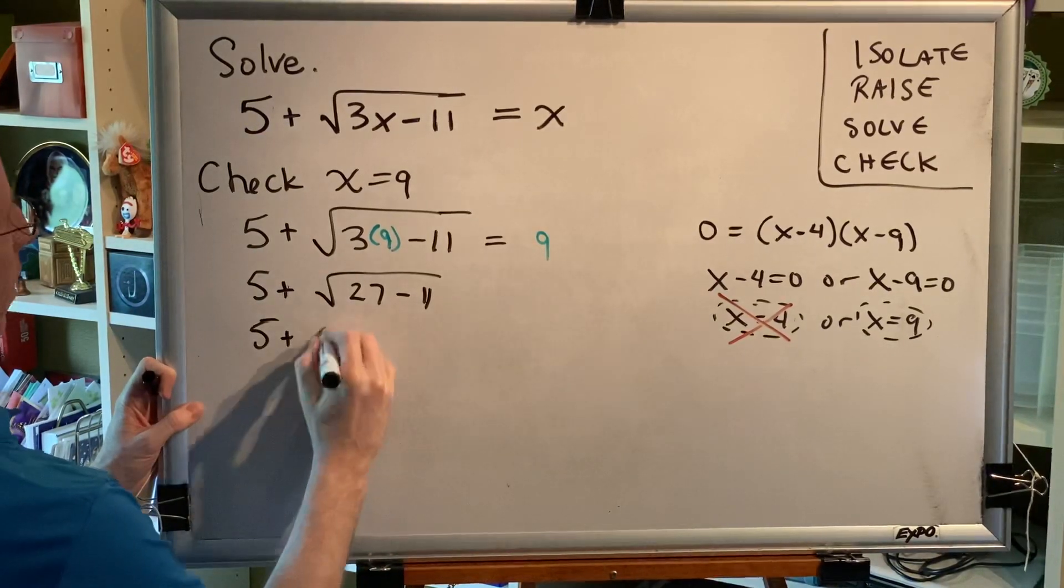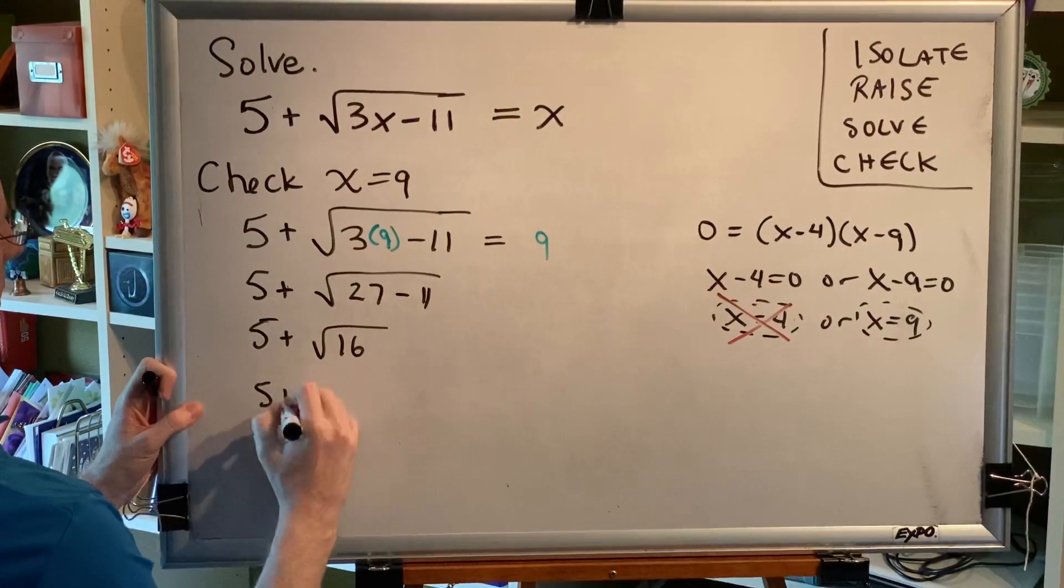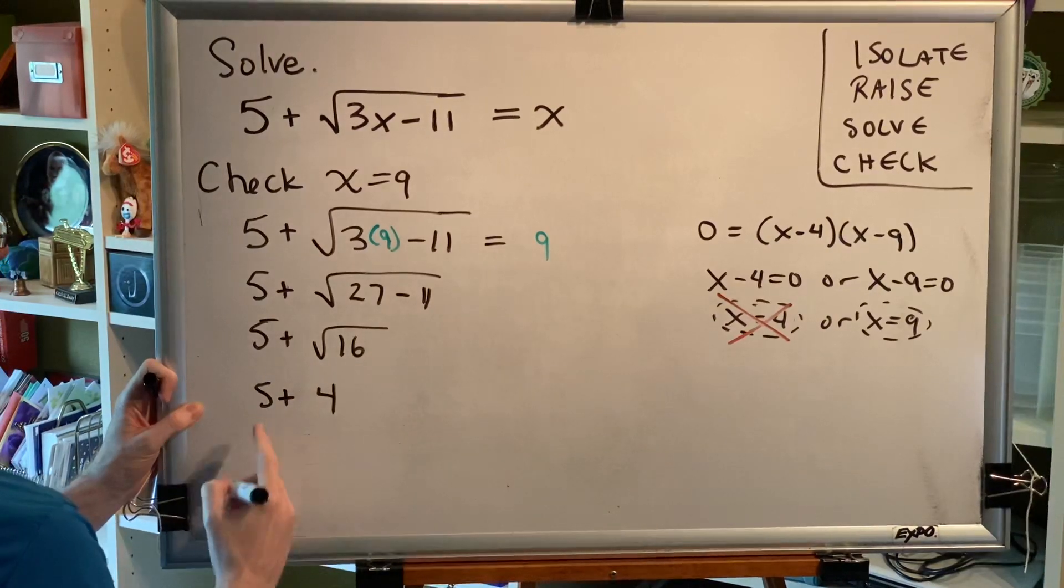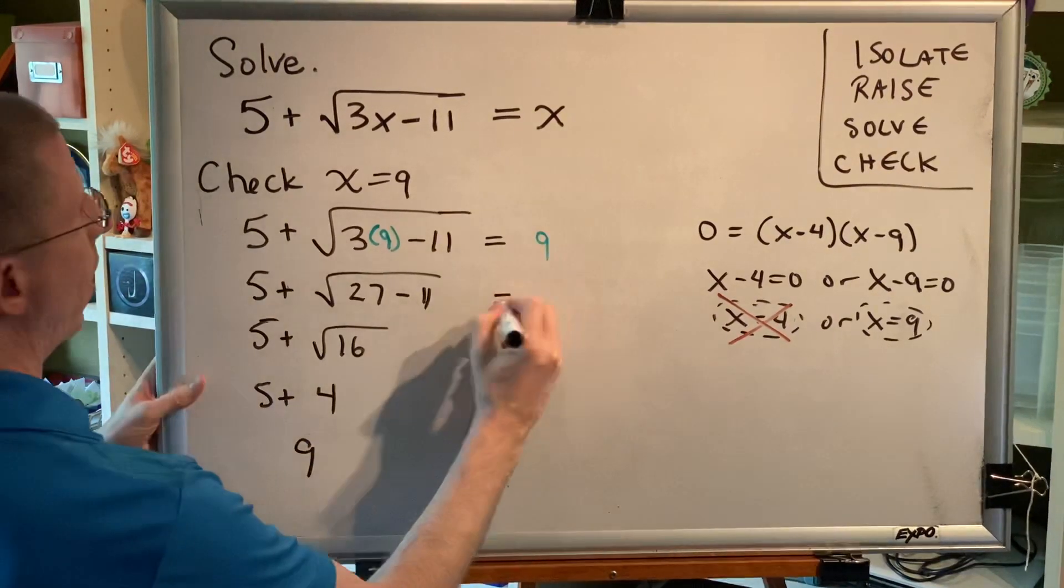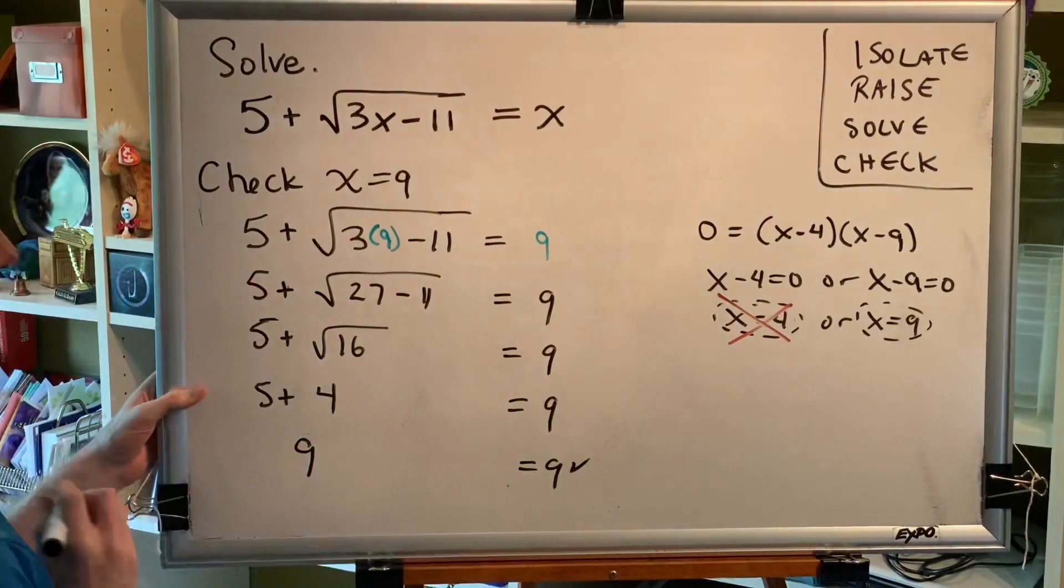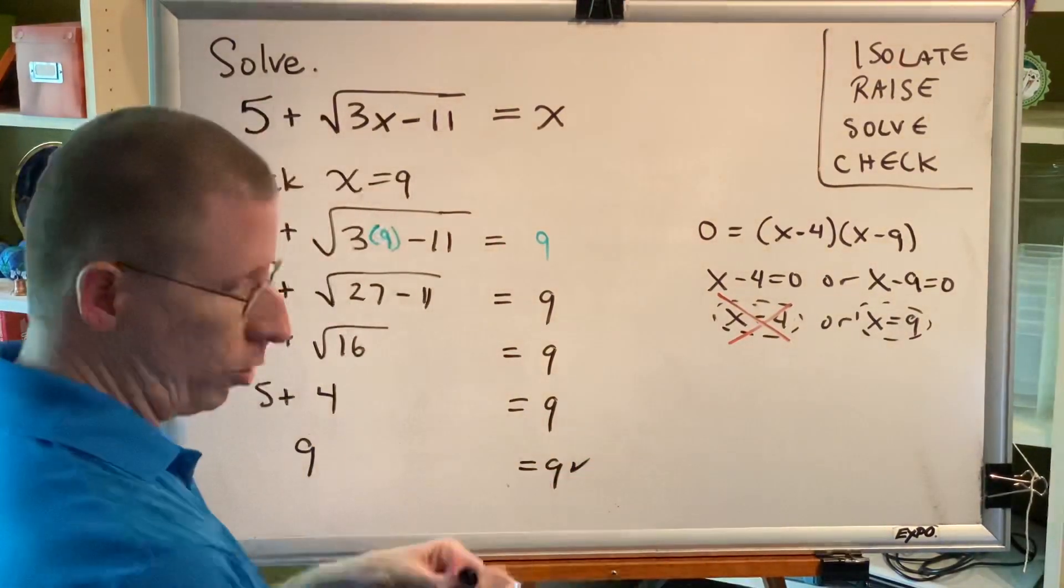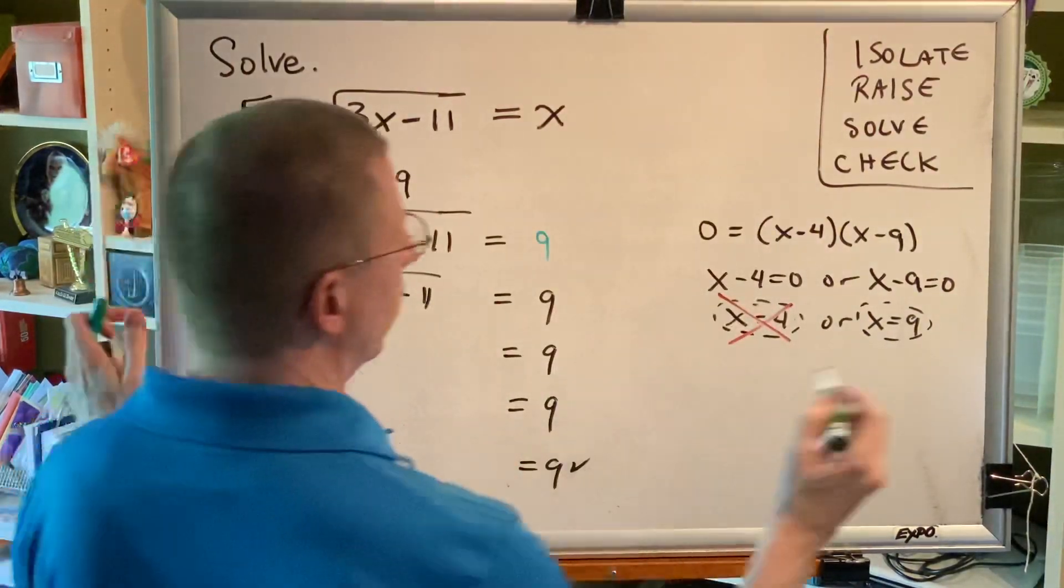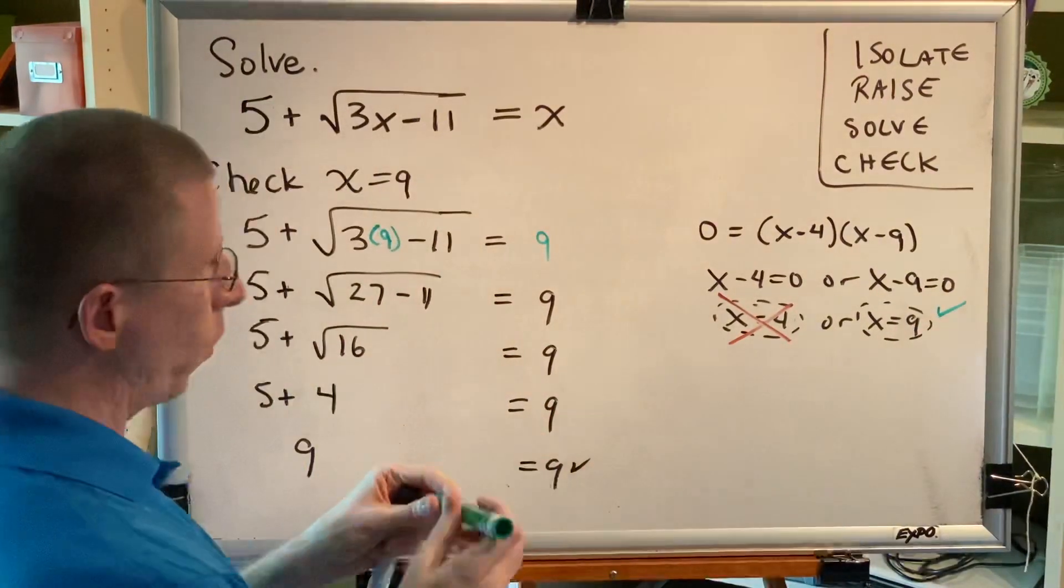27 minus 11 is 16. The square root of 16 is 4. And 5 plus 4 is 9. So we have 9 on the left, 9 on the right. Those match. And therefore, this solution checks out.